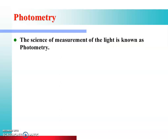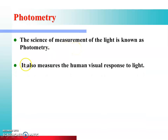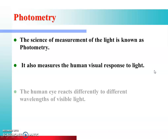Now we will discuss in depth about photometry. The science of measurement of light is known as photometry. याने light को मापने की जो technique है, उस प्रक्रिया को हम photometry कहते हैं। It also measures the human visual response to light. Human eye की light पर जो response होती है, उसको मापने का काम भी photometry करता है।